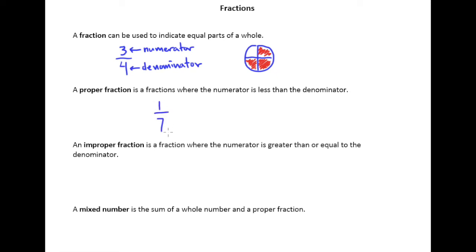An improper fraction is where the numerator is greater than or equal to the denominator. So something like five-fourths would be referred to as an improper fraction because the top is larger than the bottom.